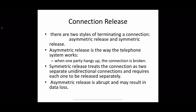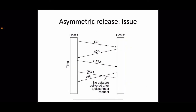There are two styles of terminating a connection: asymmetric release and symmetric release. We have already seen these in the context of the transport layer. In TCP, both approaches are used. An asymmetric release is the way the telephone system works — when one party hangs up, the connection is broken. Symmetric release treats the connection as two separate unidirectional connections and requires each to be released separately. An asymmetric release is abrupt and may result in data loss.